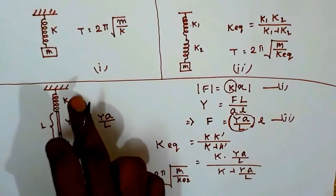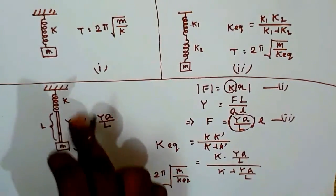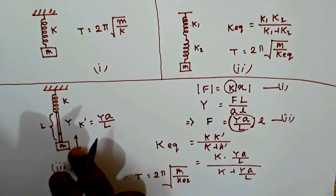And therefore here the time period T equal to 2π√(m/K_eq). Now you can put the value of K_eq here and get the time period of oscillation of this system where a spring and a rubber band is connected in series.